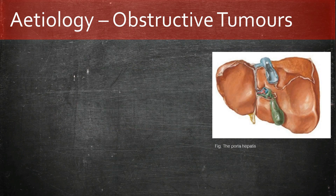The portal hepatis is a groove on the inferior surface of the liver where various structures enter. Any mass located at this site is capable of causing obstruction and resulting in impeded bile flow. This could include, for example, thrombosis, stenosis, or aneurysms of the portal triad vessels, or even a rare mass from nerves passing through — such as a neurofibrosarcoma.